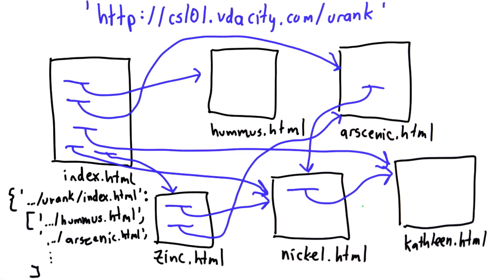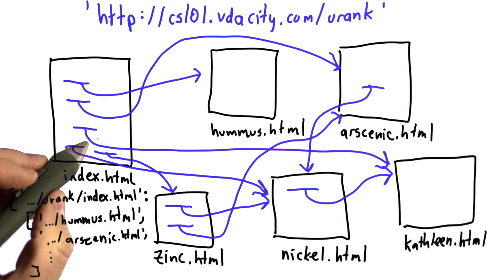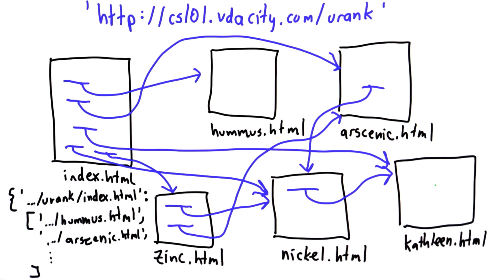And the reason for that is, well, even though it only has two incoming links, the links that are coming into the page are from popular pages. It's coming in from the index page, and it's coming in from the very popular nickel page. So that's why the page rank of Kathleen is actually higher than the page rank of nickel.